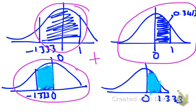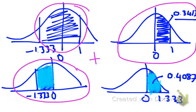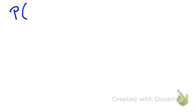Going between 0 and a positive z value is the same as going between 0 and a negative z value by symmetry. When we look that up on our probability tables, we find that area is 0.4087. So now we need to combine those together — we've got 0.3413 and 0.4087. Let's write this using correct notation: the probability for our x distribution of being between 2.9 kilos and 3.6 kilos.